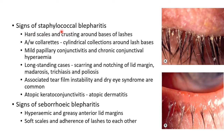Signs of staphylococcal blepharitis include hard scales and crusting around the bases of lashes. It is associated with collarettes, which are cylindrical formations around lash bases. There will be mild papillary conjunctivitis and chronic conjunctival hyperemia. In long-standing cases there can be scarring and notching of lid margin, madarosis, trichiasis and poliosis. There will be associated tear film instability and dry eye syndrome. Atopic keratoconjunctivitis can be seen in atopic dermatitis associated with staphylococcal blepharitis.